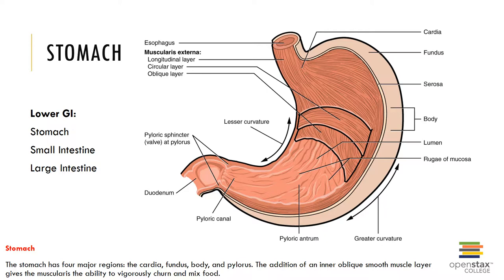The greater curvature is the lateral surface of the stomach to which the greater omentum is attached, forming an enormous pouch that drapes down over the anterior surface of the small intestine. Adipose tissue in the greater omentum provides padding and protection across the abdomen. The lesser curvature is the medial surface to which the lesser omentum is attached, stabilizing the stomach and providing a route for blood vessels to enter or leave the liver. Rugae are longitudinal folds within the lumen of the stomach that aid in stretch and expandability; as the stomach fills, the rugae gradually flatten.